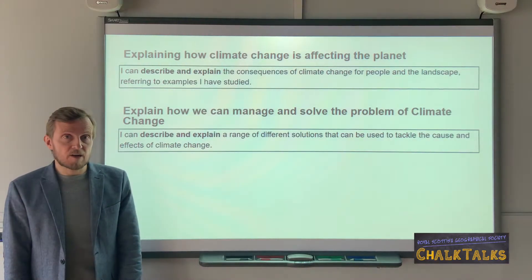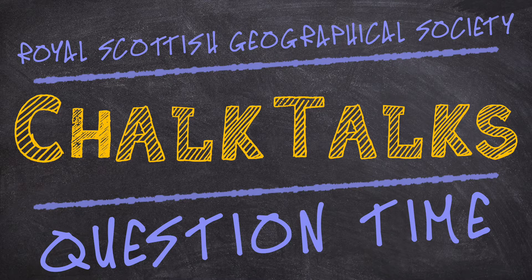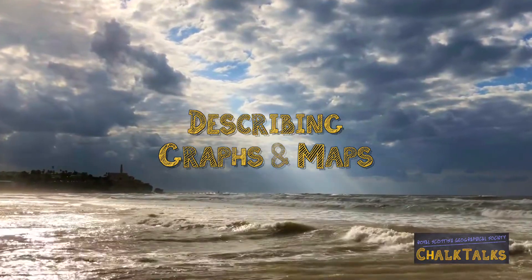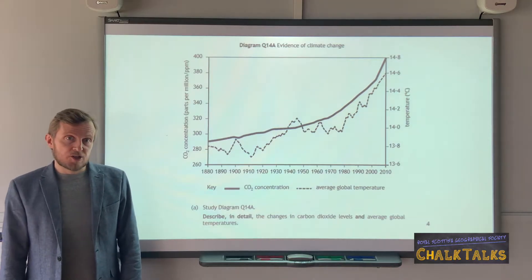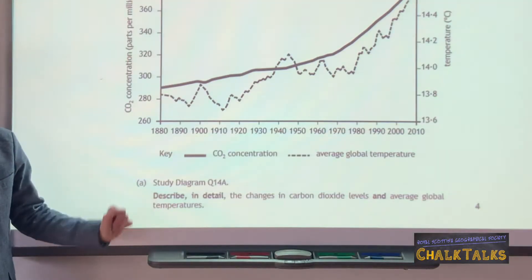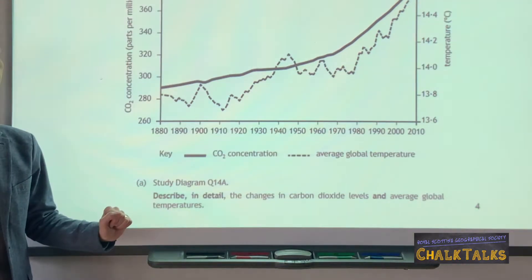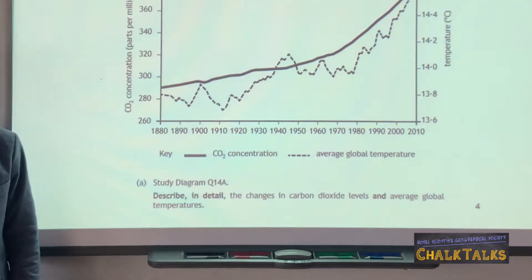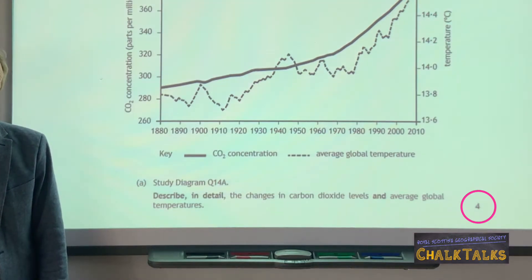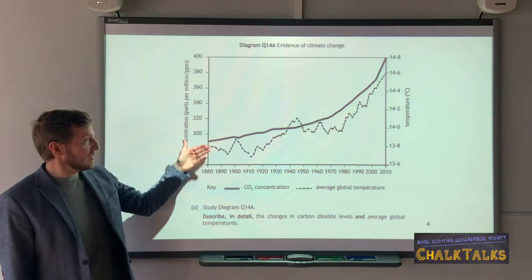That is a summary of the main learning outcomes. Let's now have a look at some typical exam questions you're likely to encounter. In this first example of an exam question you can see a graph. There are two things to bear in mind before answering the question. First of all, this is a describe question — you are not being asked to give reasons that explain why the change is happening, rather you're just being asked to describe what the graph shows in detail. Second, this is worth four marks so you'll be expected to make four statements referring to the question.